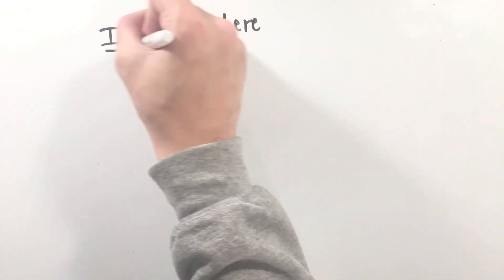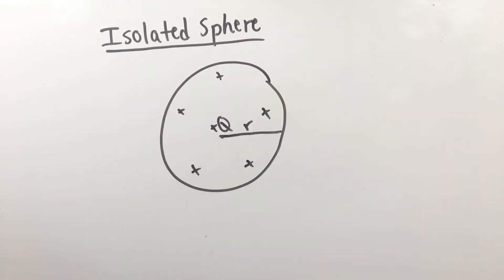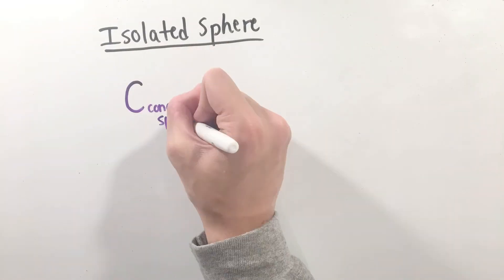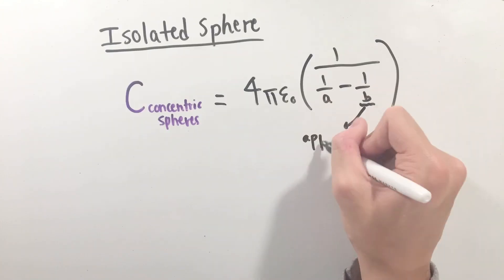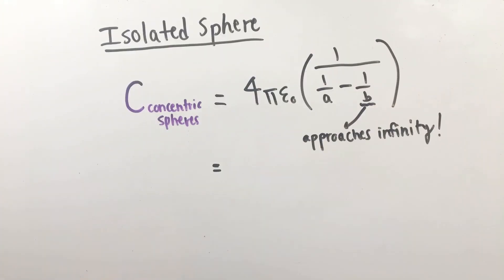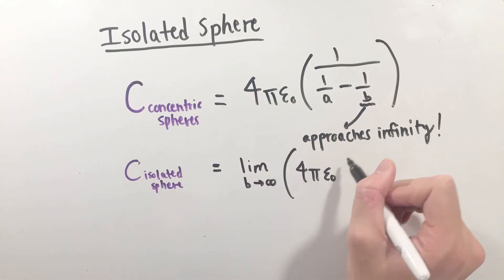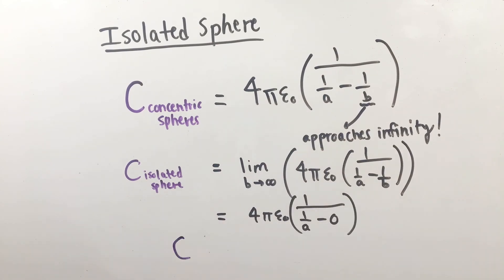Now, one interesting thing to note is that a single charged sphere actually has a capacitance of its own and the ability to store charge and energy. To calculate its capacitance, imagine that we have a co-centric spherical capacitor, but the outer radius approaches infinity. With this creative manipulation, the isolated sphere capacitance is actually quite easy to find.